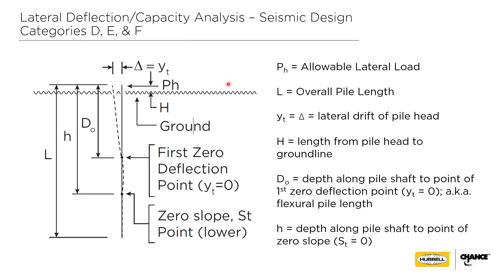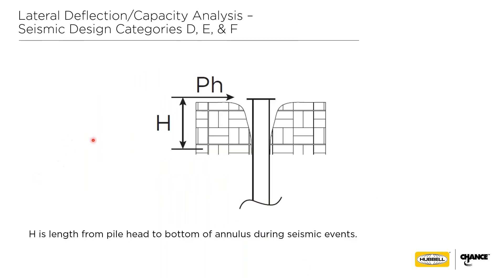Here's a sketch of what we looked at — the pile taking a deflected shape back and forth. We're looking at Y_T or delta, the lateral drift at the pile head. The H value is the actual length from the pile head to the ground line, important when looking at the annulus that formed in the actual testing. D_O is the depth along the shaft to the point of zero deflection or the flexural pile length. S_T is the depth down to the point of zero slope. L is the overall pile length.